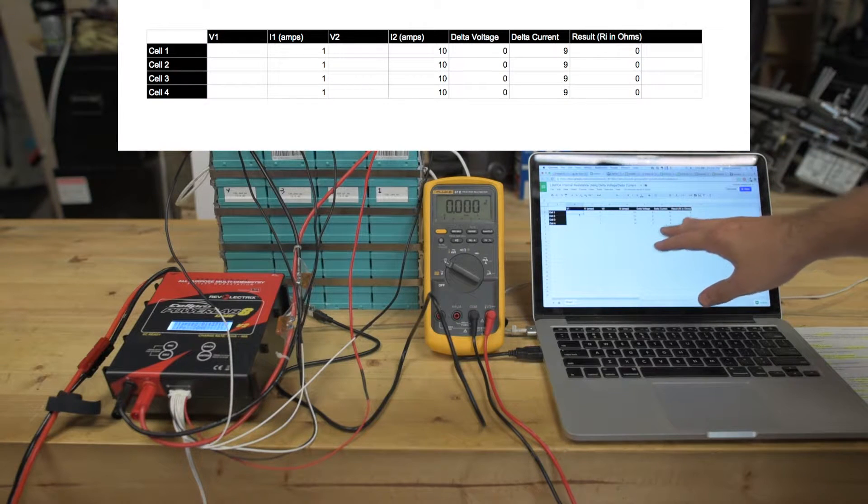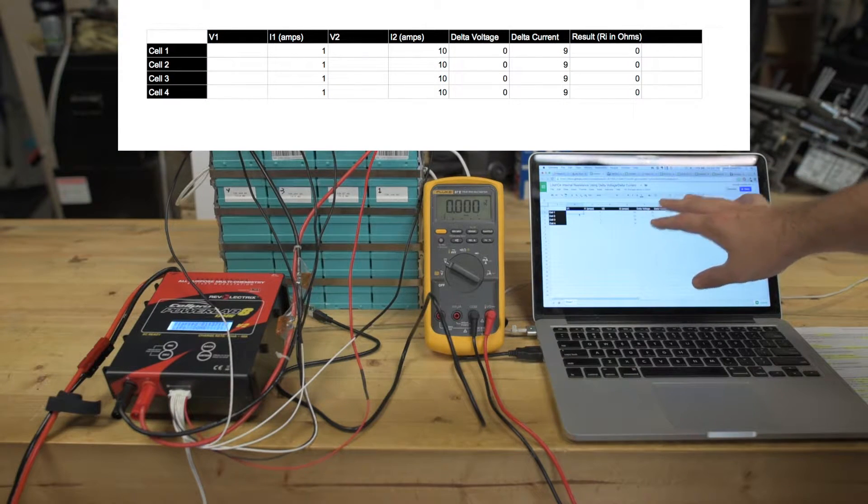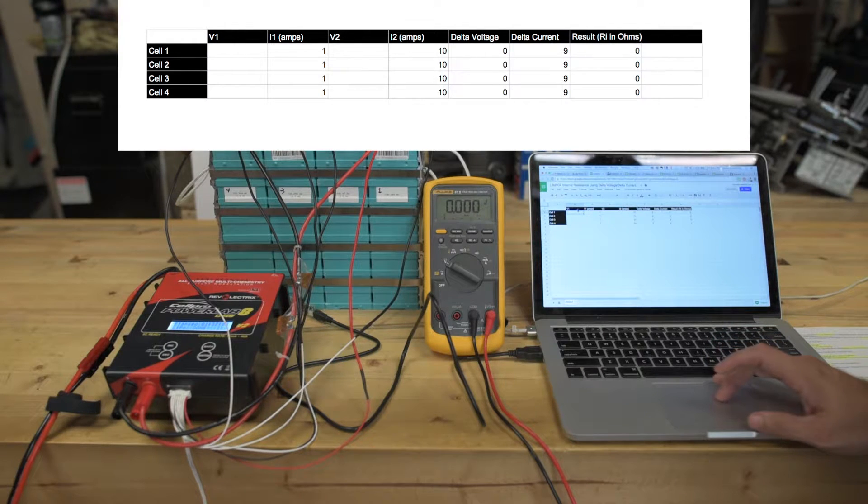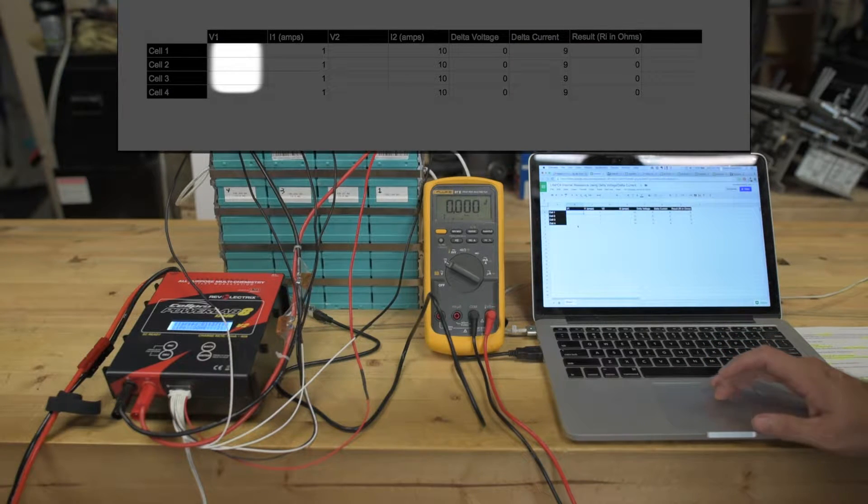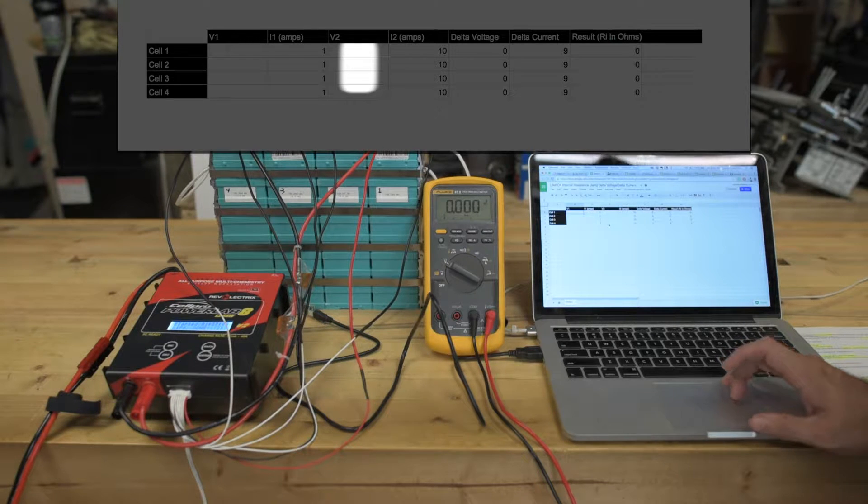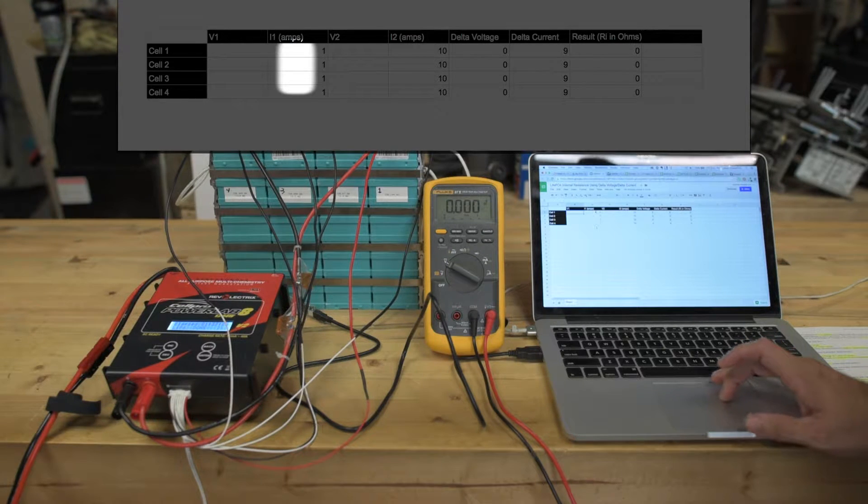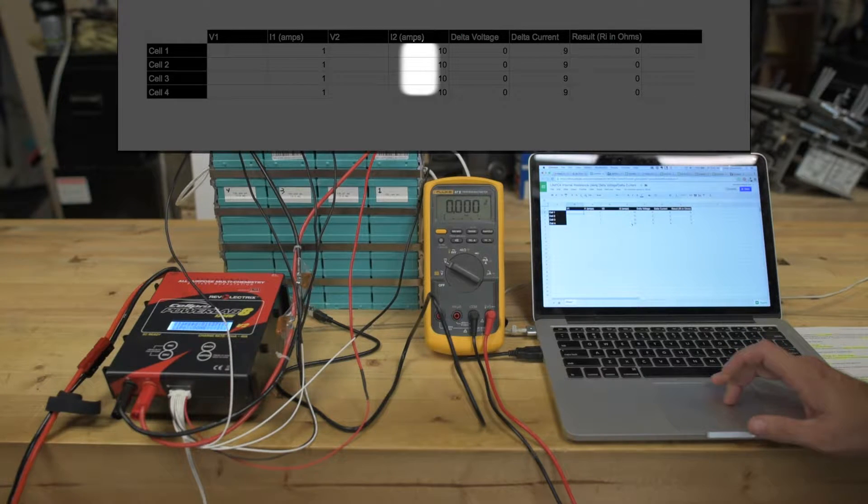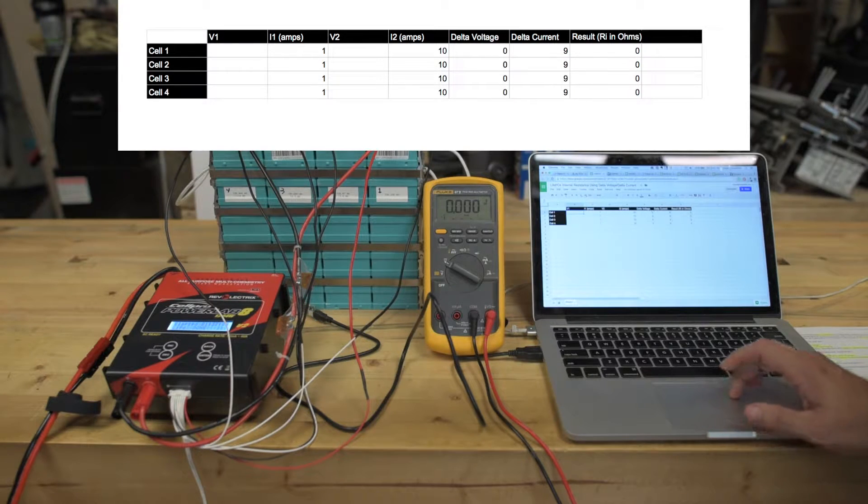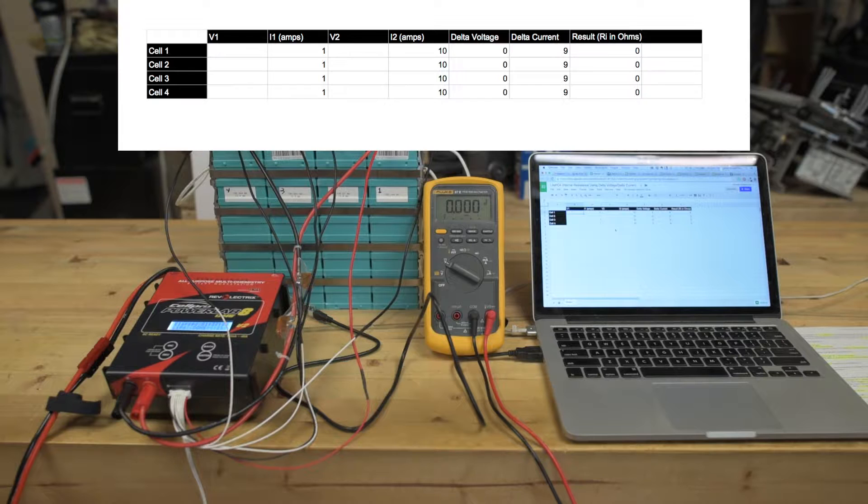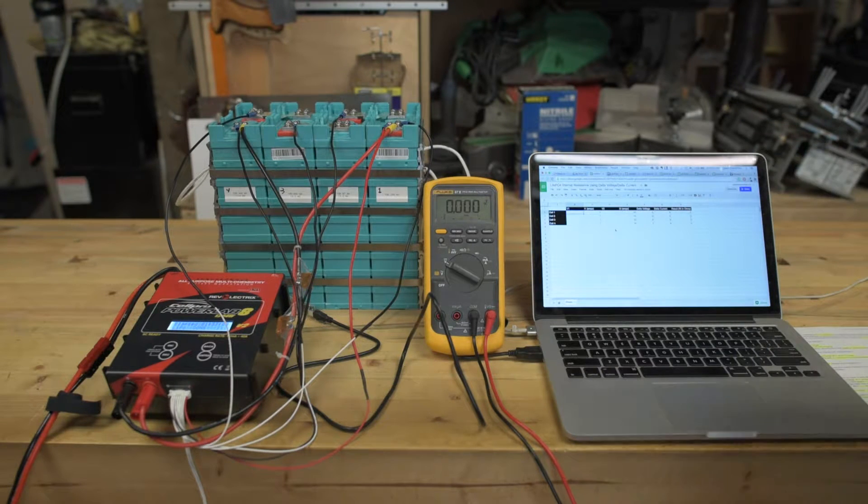I've set this up so that all of the math is contained in macros within the fields. So what I'm going to do is fill in the V1 or voltage 1 column and also the V2 or voltage 2 column. The amperage for I1 is already set to 1 amp, and the amperage for I2 is already set to 10 amps. And then all of these other columns, delta voltage, delta current, and internal resistance in ohms will be automatically populated. This is just to simplify my life a little bit so that I don't have to do math on camera.